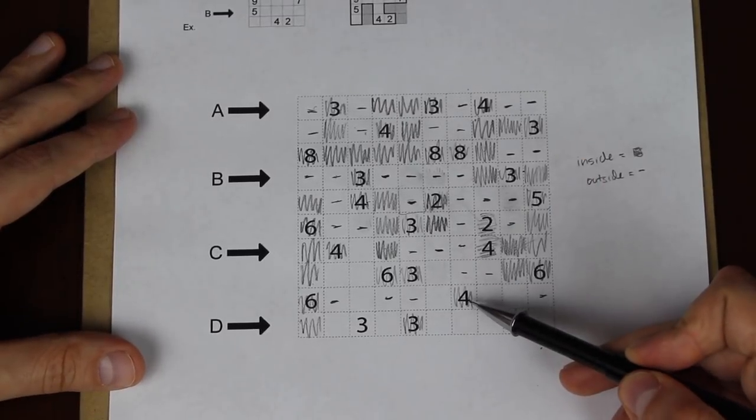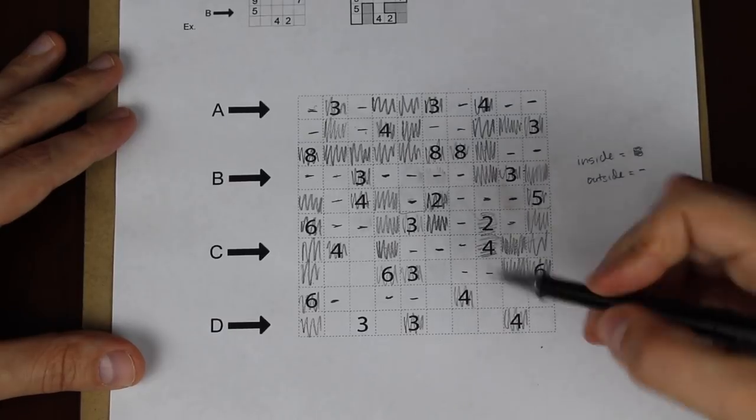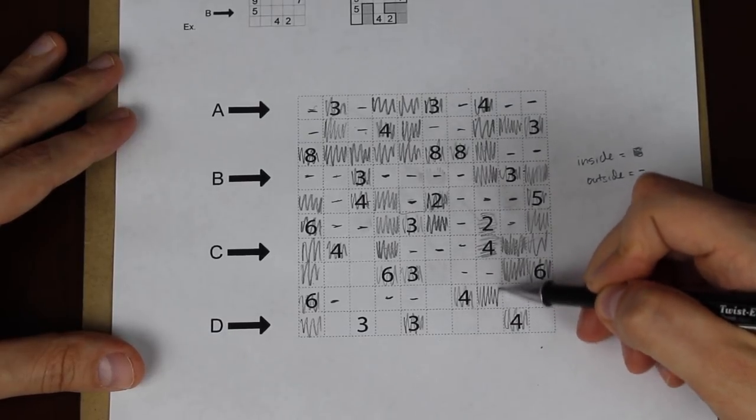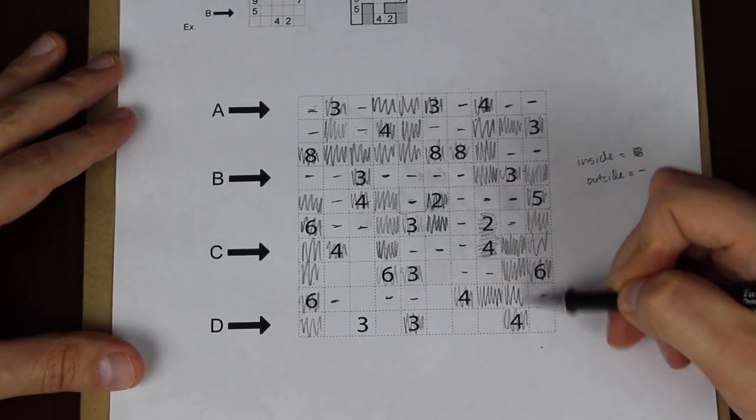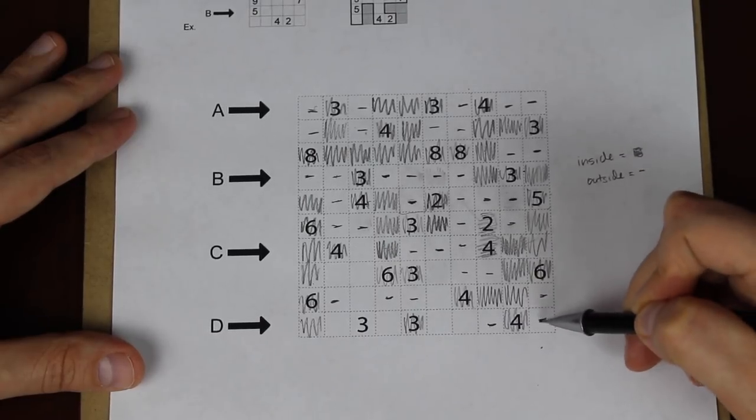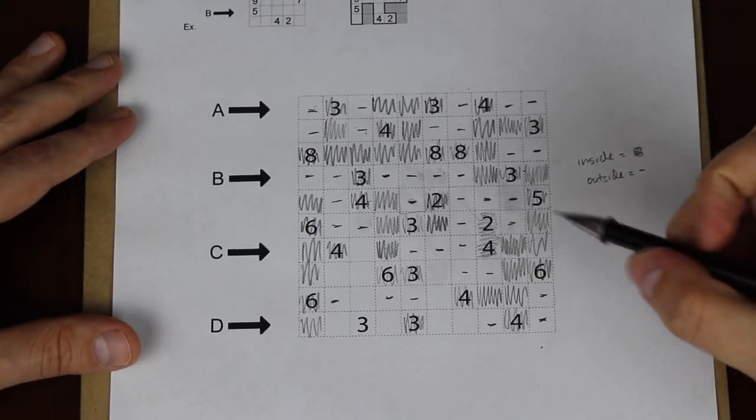What about this 4 down here? 1, 2, 3. It must go at least 1 square to the left. At which point we have to fill this in from the checkerboard here. That fills that 4. And tells us something very interesting.